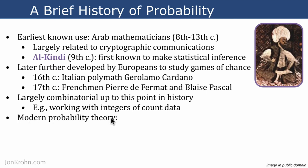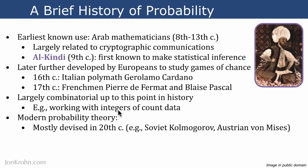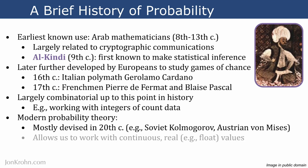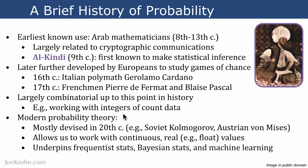Modern probability theory, which expands beyond just combinatorics and integers, was mostly devised very recently in the 20th century, for example by the Soviet Kolmogorov and the Austrian von Mises. This modern probability theory allows us to work with continuous real values — what in computing we call float values. This modern probability theory underpins Frequentist statistics, Bayesian statistics, and machine learning today — all different approaches to making inferences from data. Probability theory plays a key role in all of them, and we will dig into that in more detail in a later video.